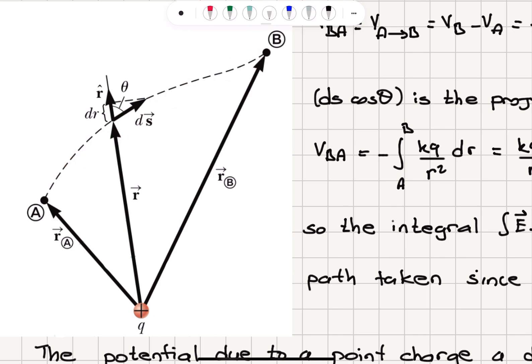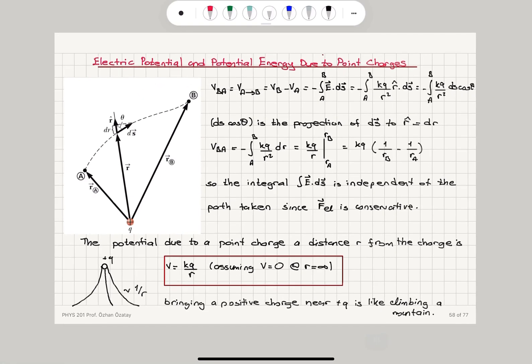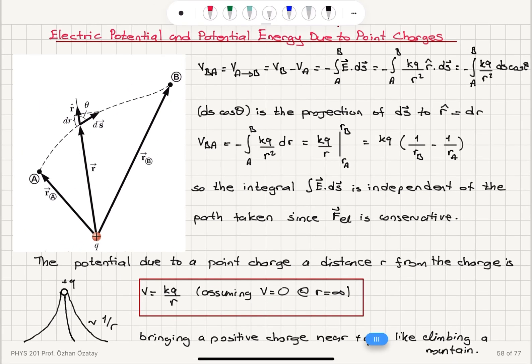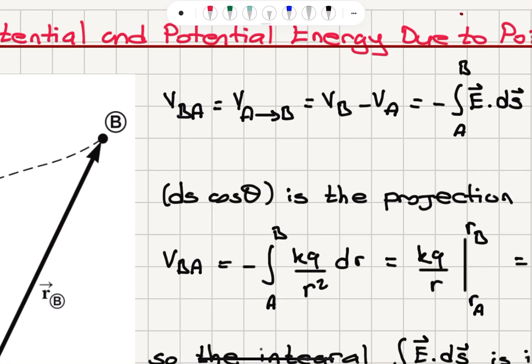We follow a path, and this is our incremental path displacement vector ds. R-hat is the unit vector pointing in the radially outward direction from the point charge. They make an angle theta at a certain point on this path. The potential of B with respect to A — going from point A to point B — is the potential difference V_B minus V_A.